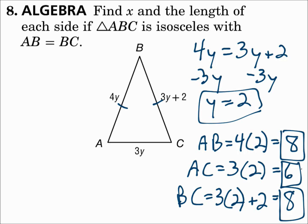One thing to remember: an equilateral triangle is always equiangular, which is always acute, which is always isosceles. So if it's equilateral, it has all four of those classifications: equilateral, equiangular, acute, and isosceles.